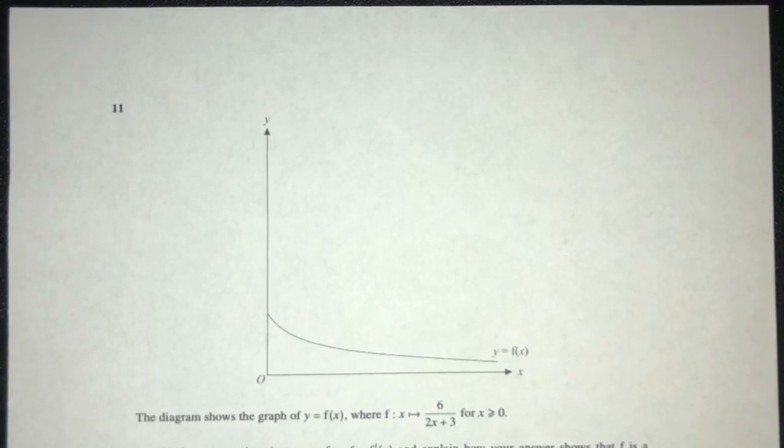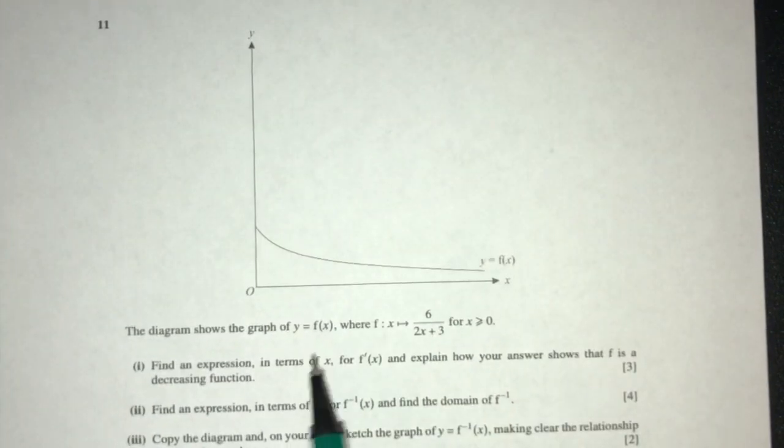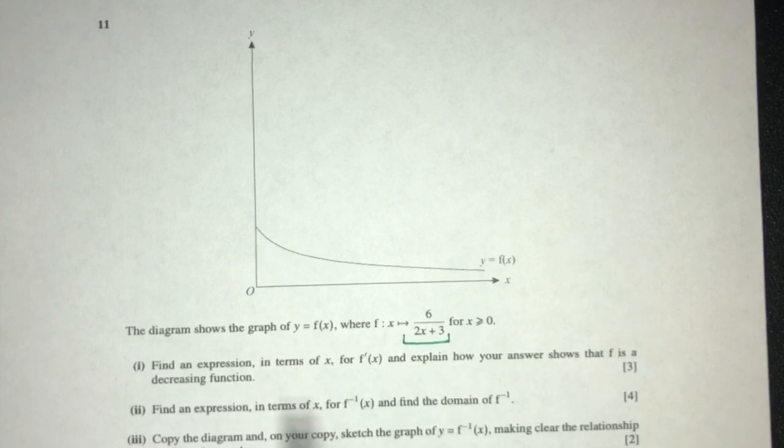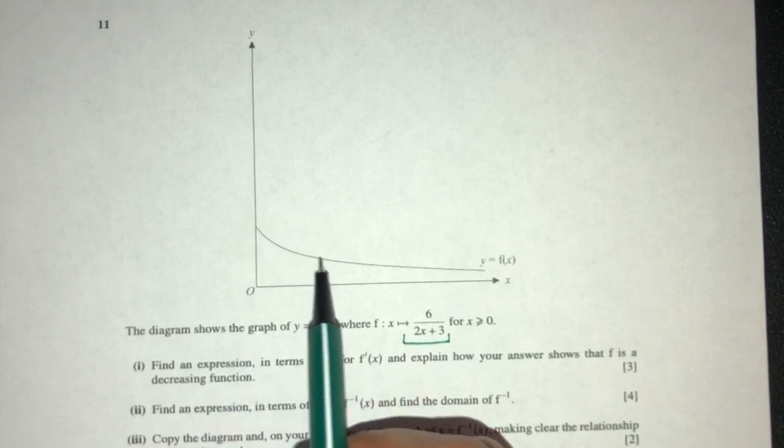Let's move on to the next question. Here we have a diagram showing the graph of y equals f of x. Now f of x is given by this equation. As you can see, it is going down.